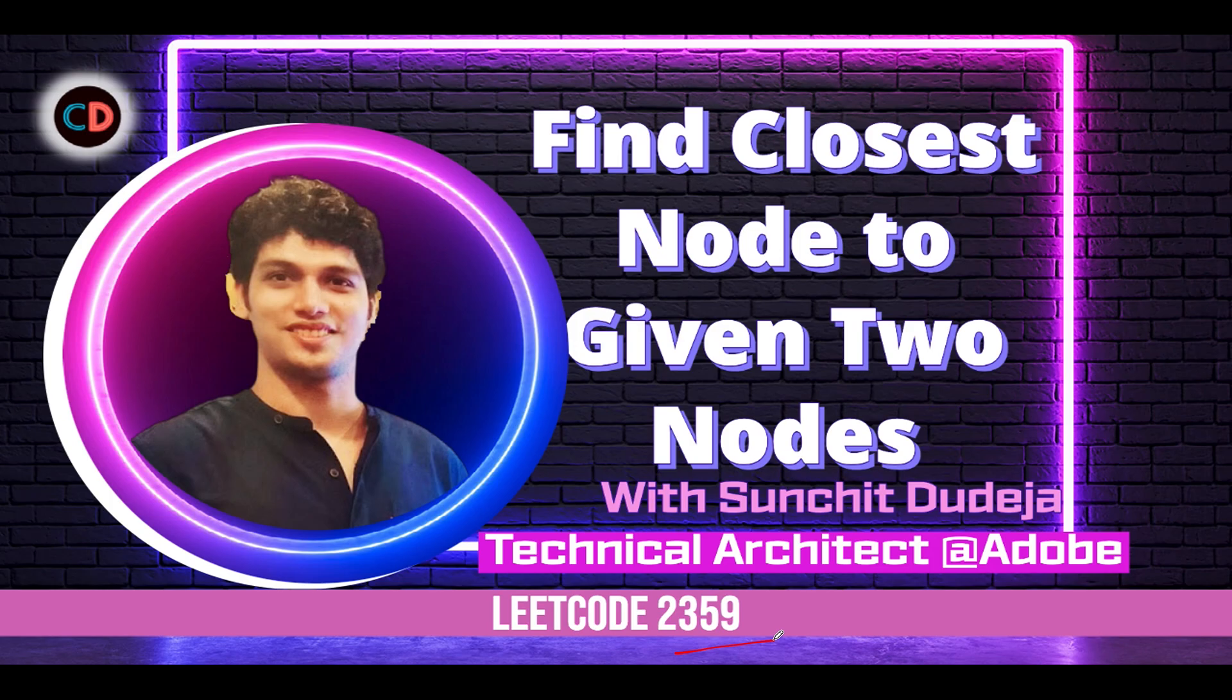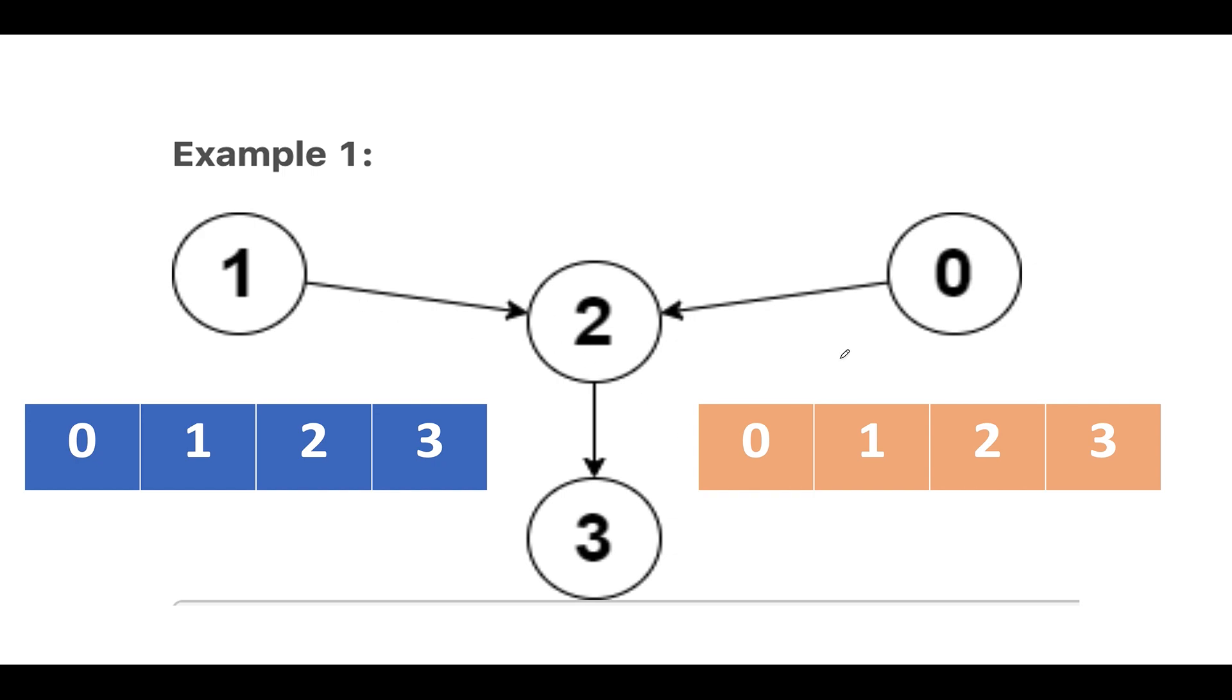Now let's get back to the example. I have taken the same one that was specified in the question, which is zero is pointing to two, two points to three, and one also points to two. In total, we have four nodes. And in the question, node one is given as the first node, and node zero is given as the second node. So in short, we need to identify the lowest common ancestor or the merging point, which is closest to both these nodes zero and one.